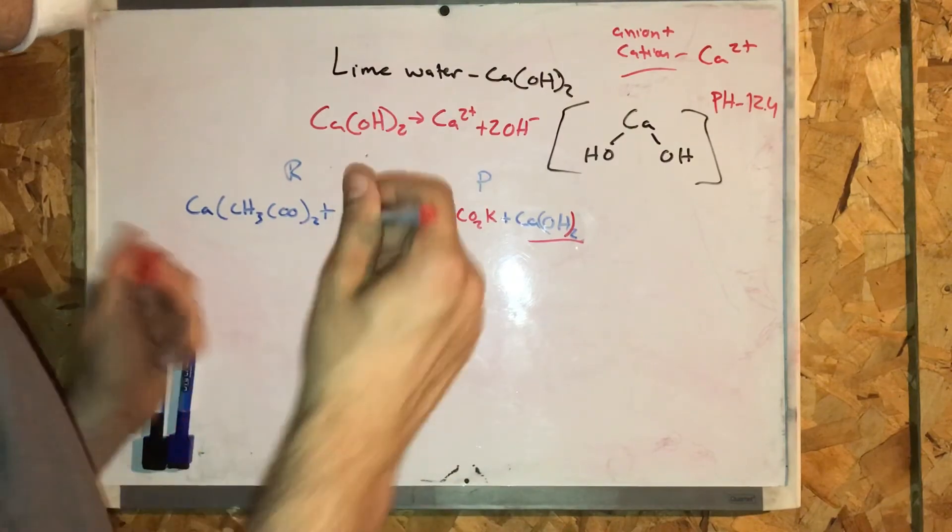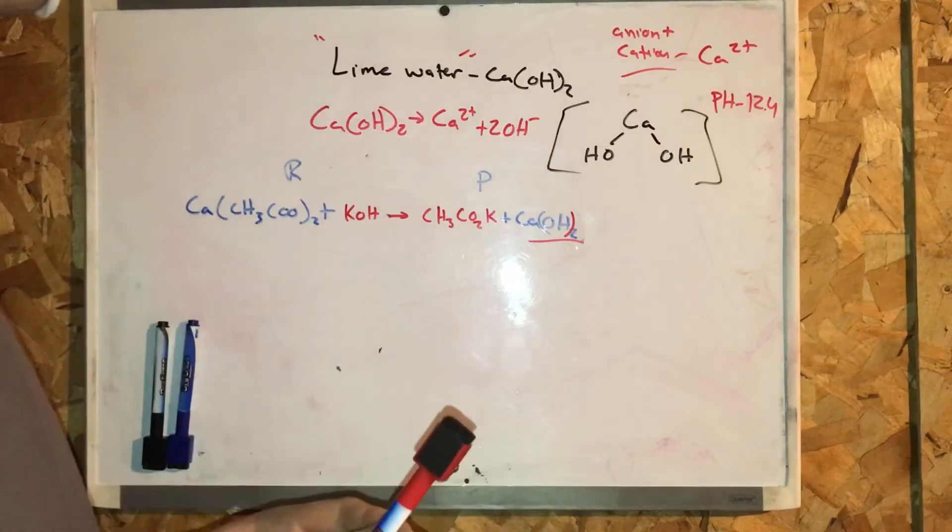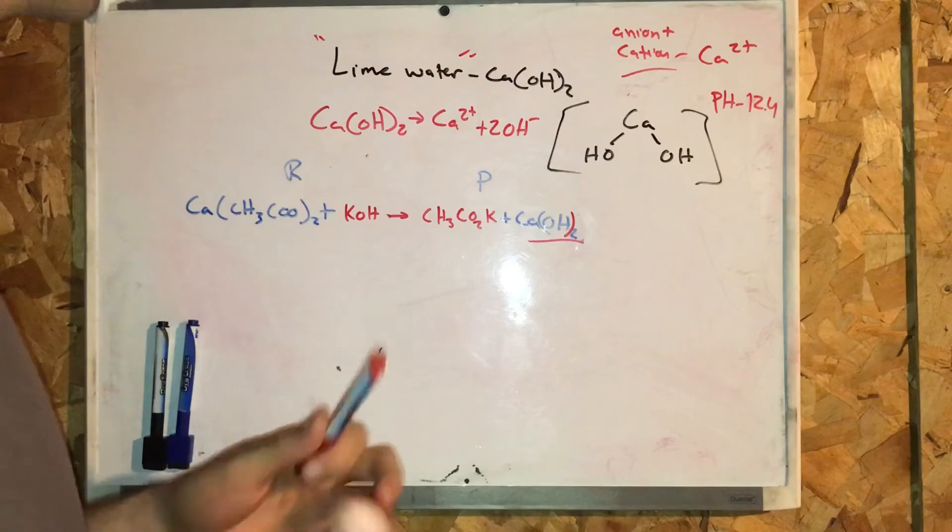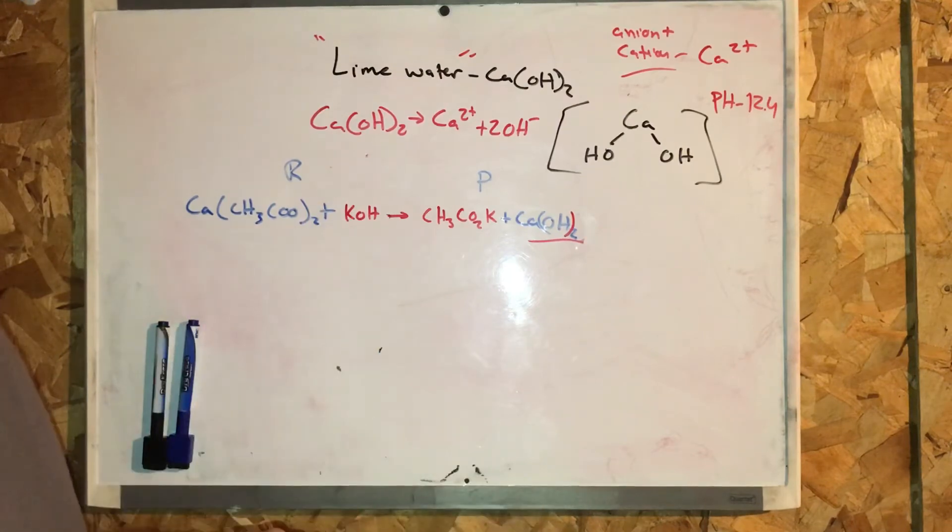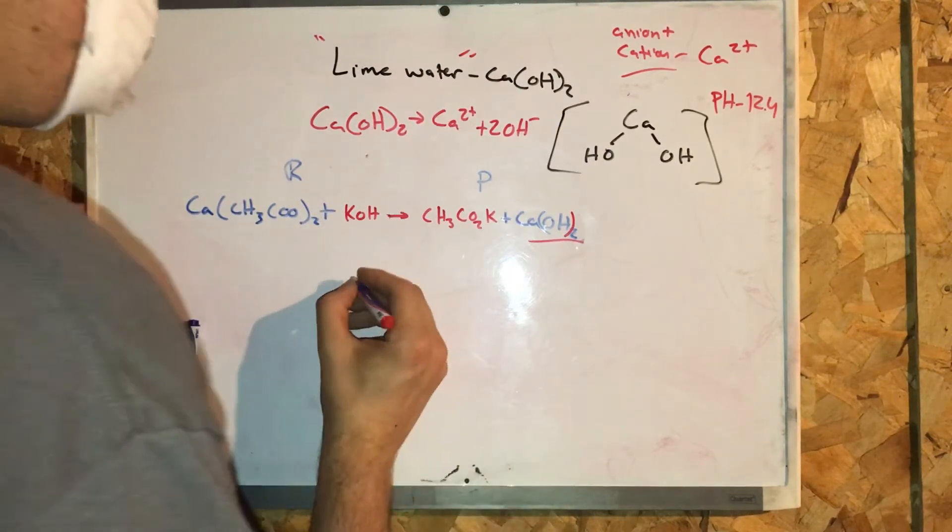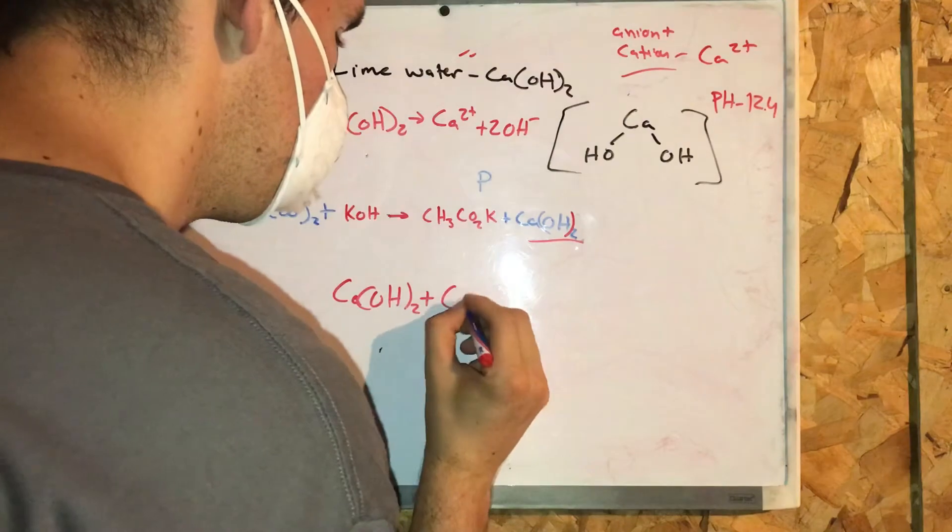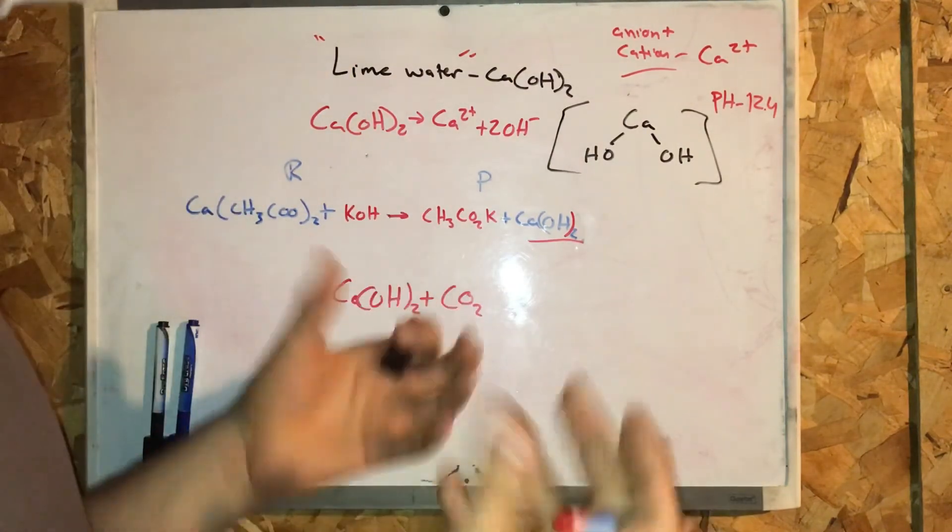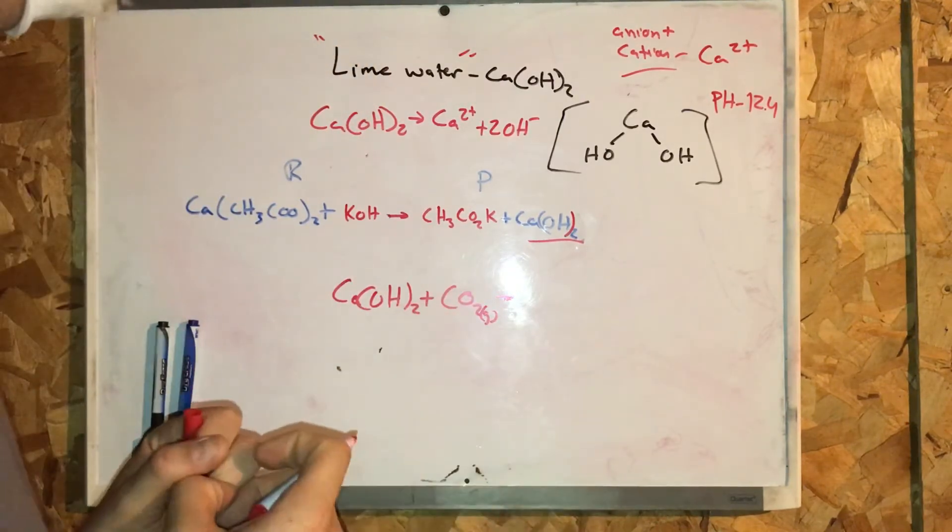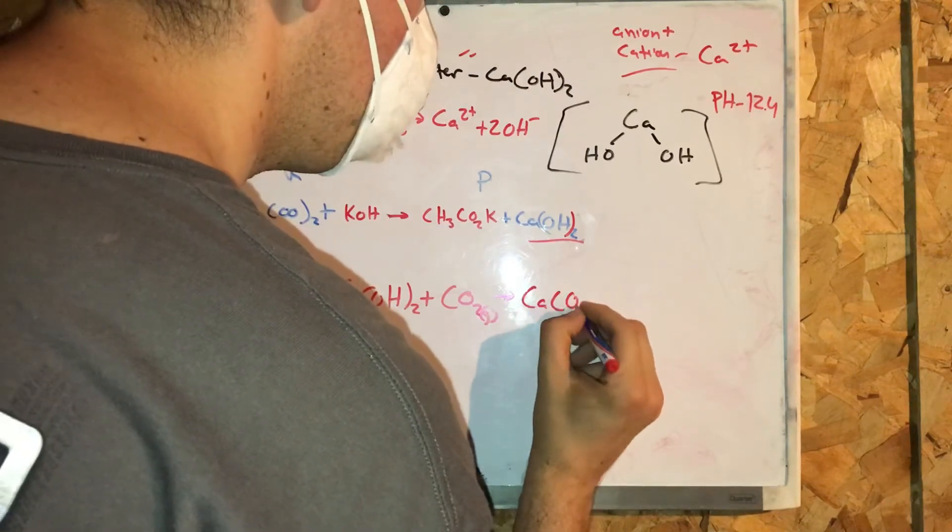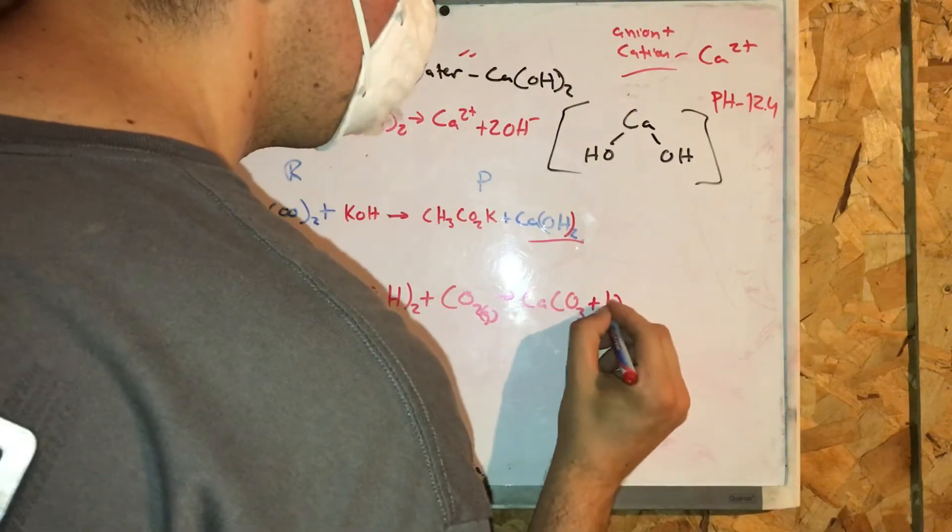Now, lime water turns milky in the presence of CO2. Why does this happen? This is due to the formation of calcium carbonate. A process called carbonation. So chemically written, we're going to say calcium hydroxide plus carbon dioxide. In essence, this is gas. Yields calcium carbonate plus H2O, water.